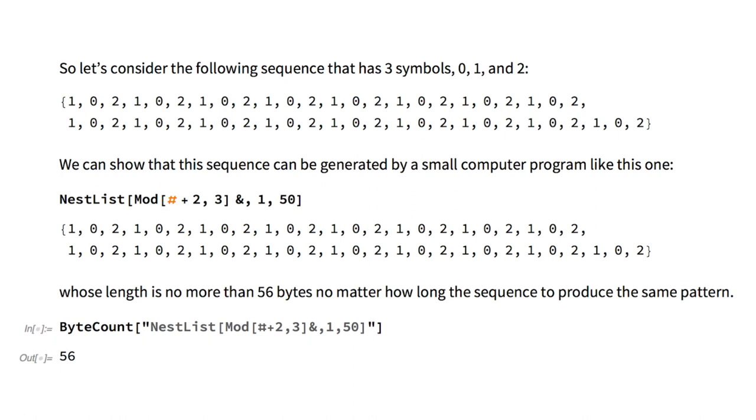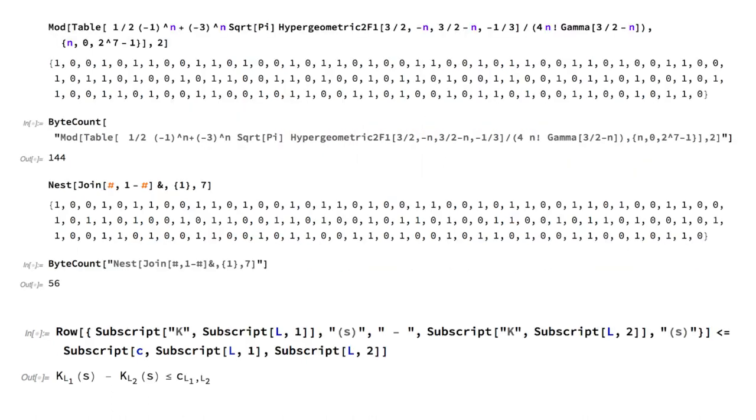And even in a single computer language there may be different computer programs of different size that can produce the same object. For example, the following two computer programs can generate any number of digits of the Thue-Morse sequence, and both are very different in length even though both are small and generate the same sequence, and even though they are written in the Mathematica language. So how to deal with different computer programs in possibly different computer languages with different lengths?